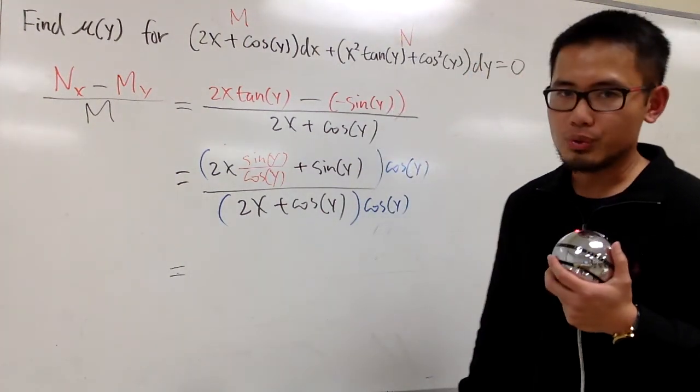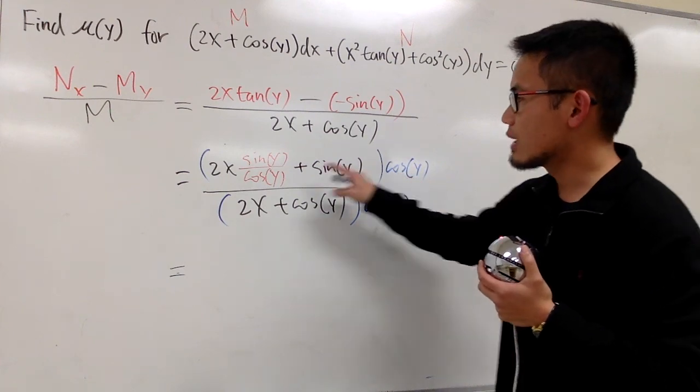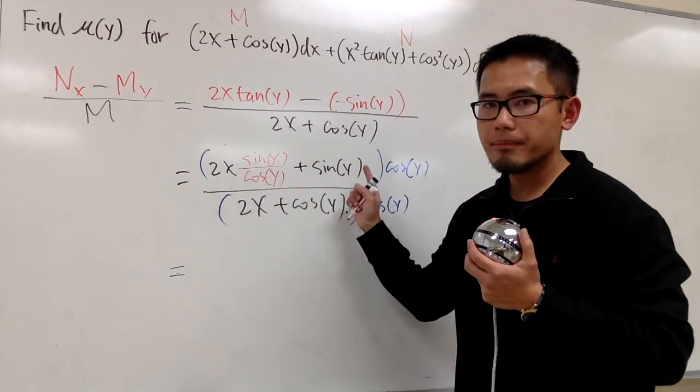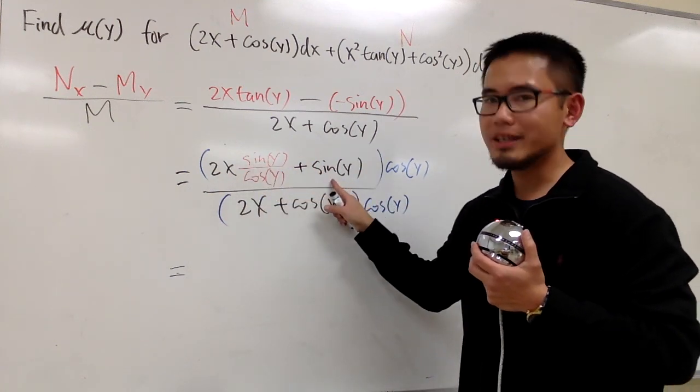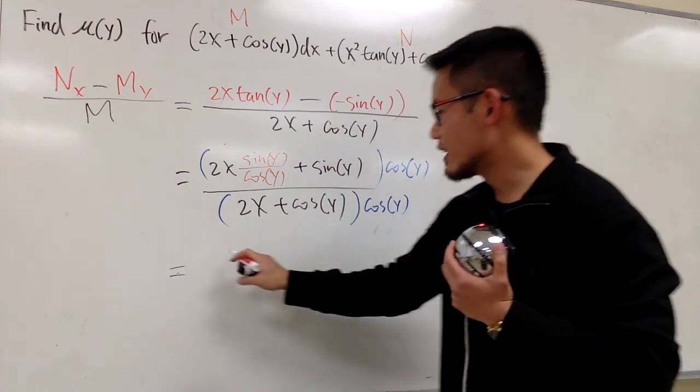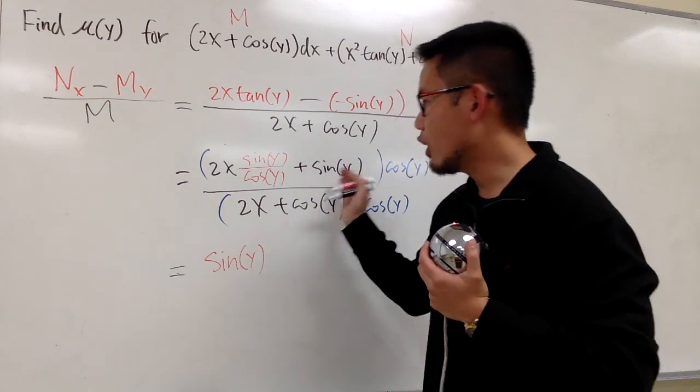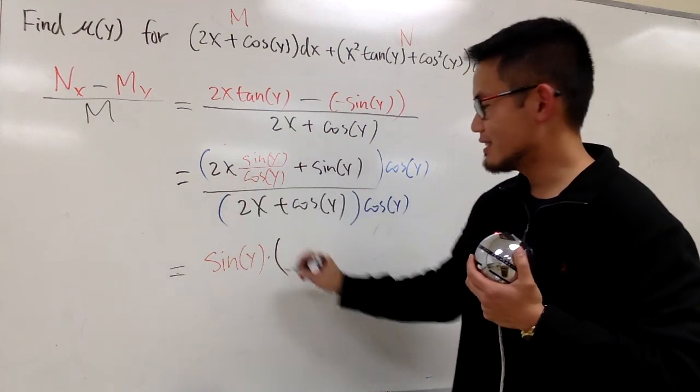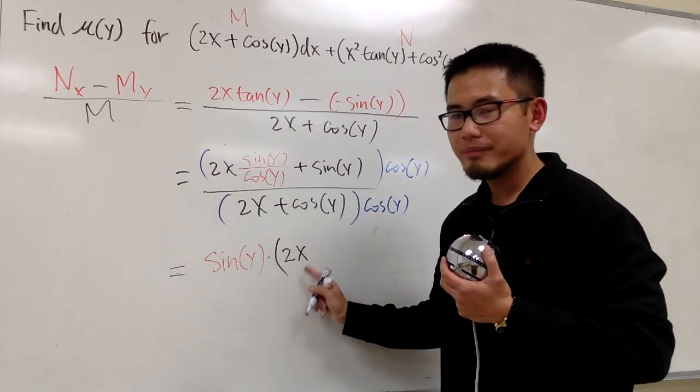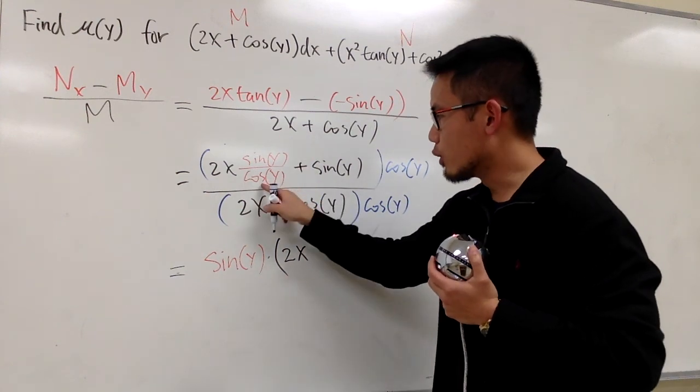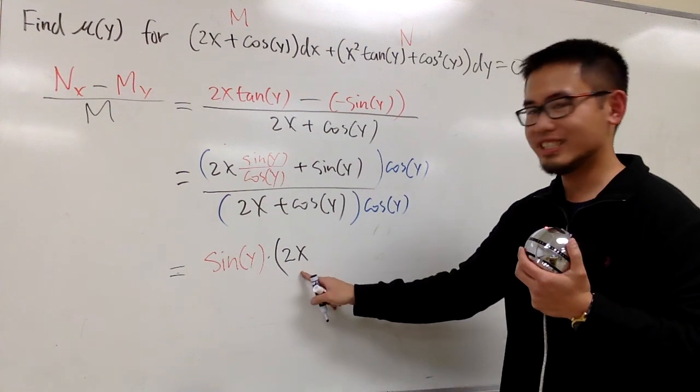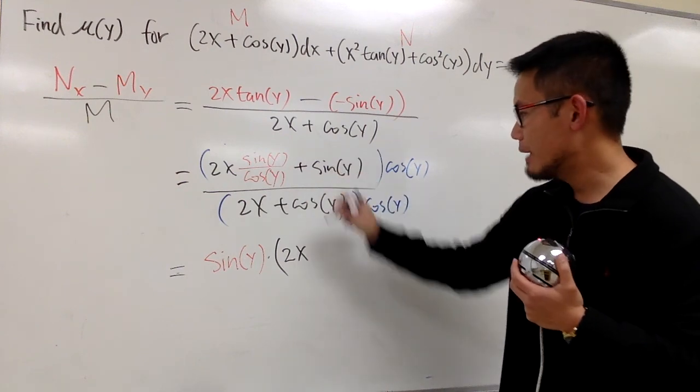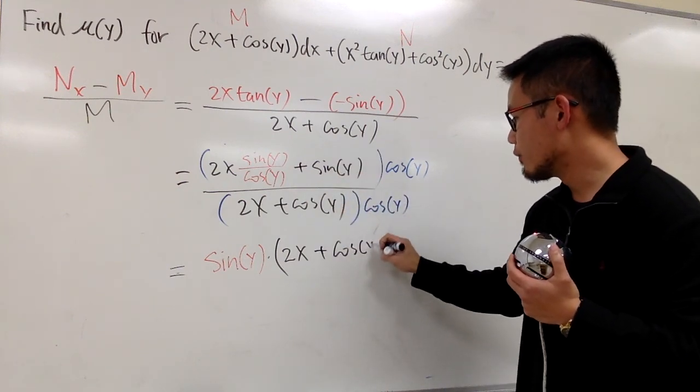All right, so this is how I want to show you. I'm going to distribute cosine y into here. But pay attention that on the top, I do have this sine y in common. Let's factor that out first. So I will put this down as sine of y, all the way in the front, and then I will multiply by 2x. The sine y is out already. 1 over cosine y times this cosine y will be just 1, so we have 2x. And next, the sine y is out already, so we add it with cosine of y, like this.